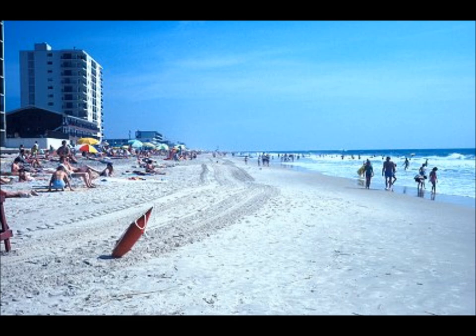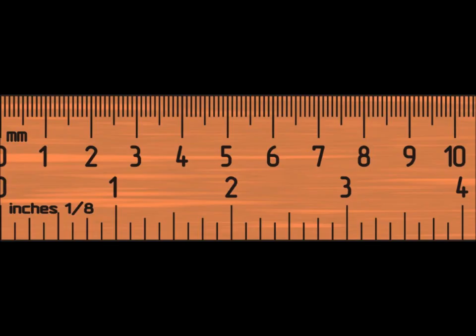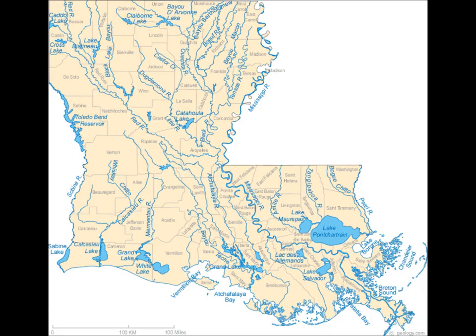In many cases, individual beaches only lose a few inches per year. But in Louisiana, the outer coast is losing 50-some feet of beach every year.